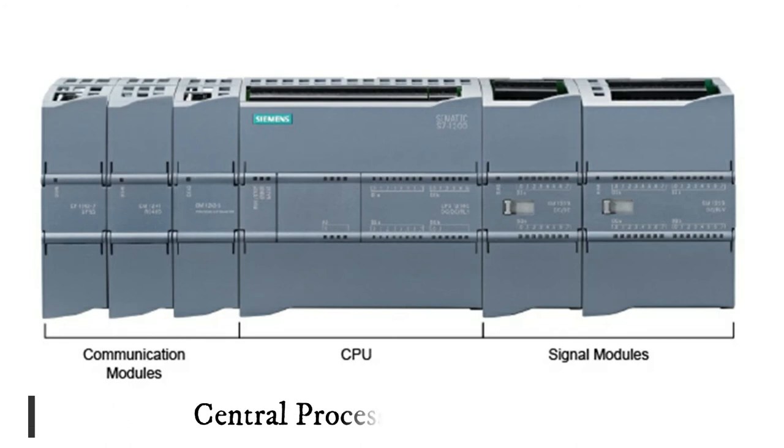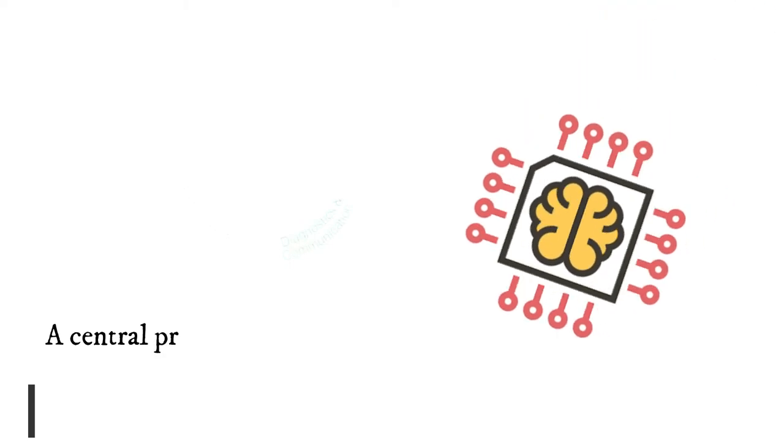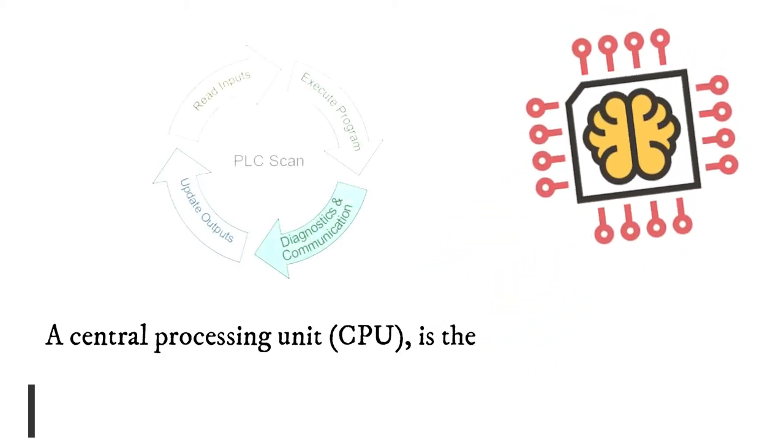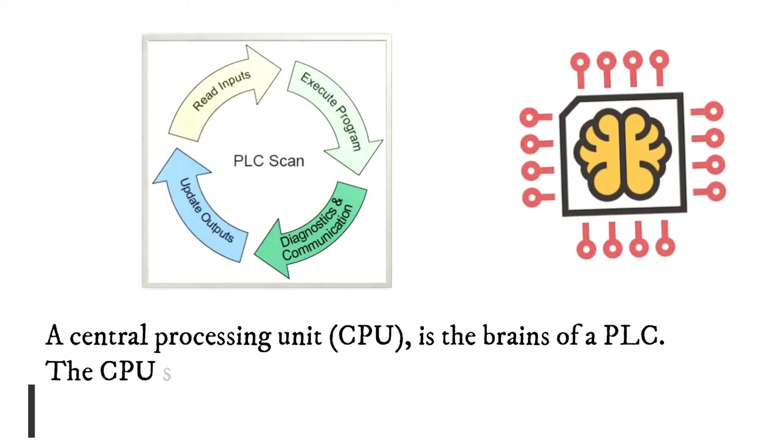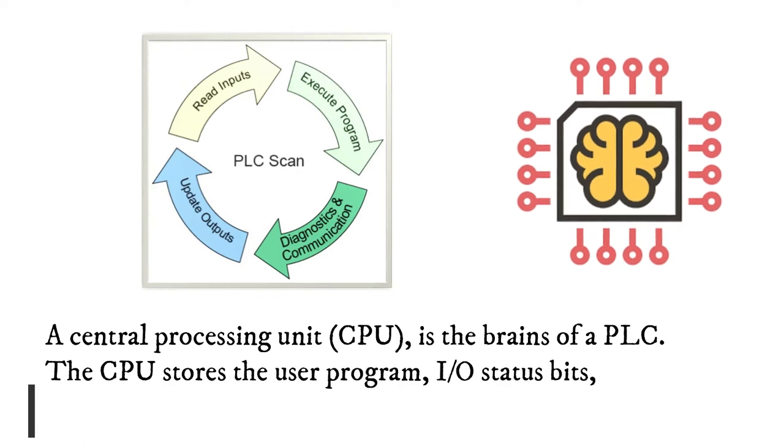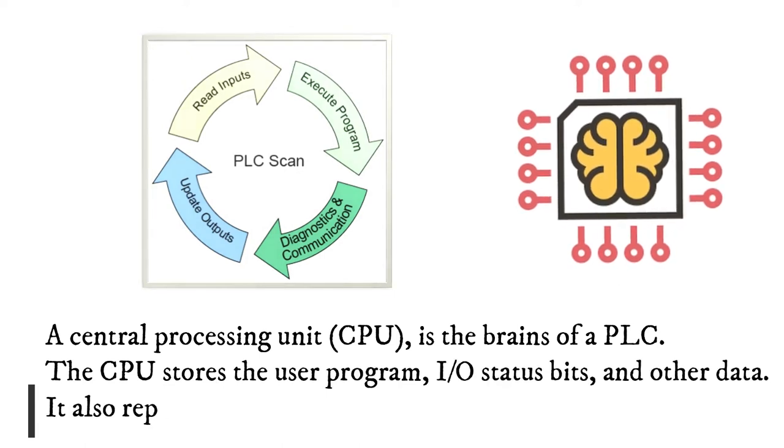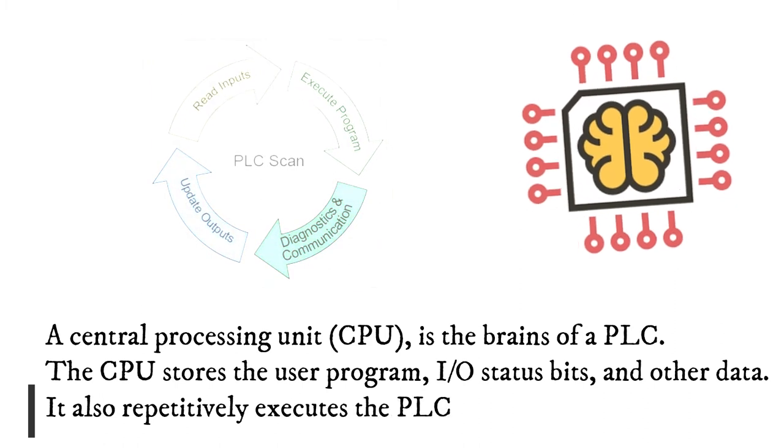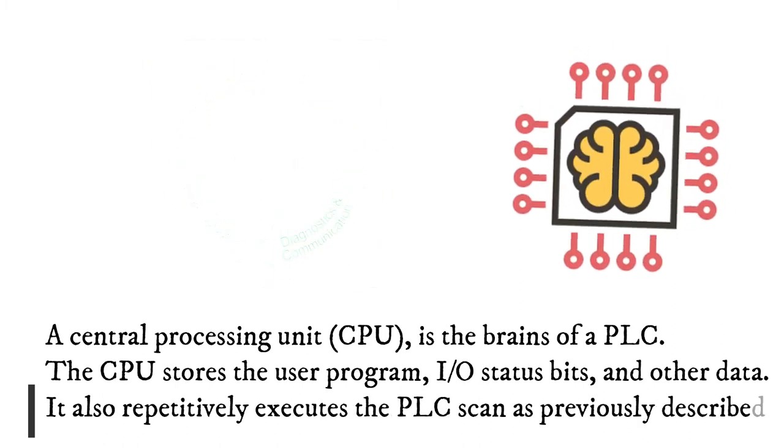A central processing unit (CPU) is the brains of a PLC. The CPU stores the user program, I/O status bits, and other data. It also repetitively executes the PLC scan as previously described.